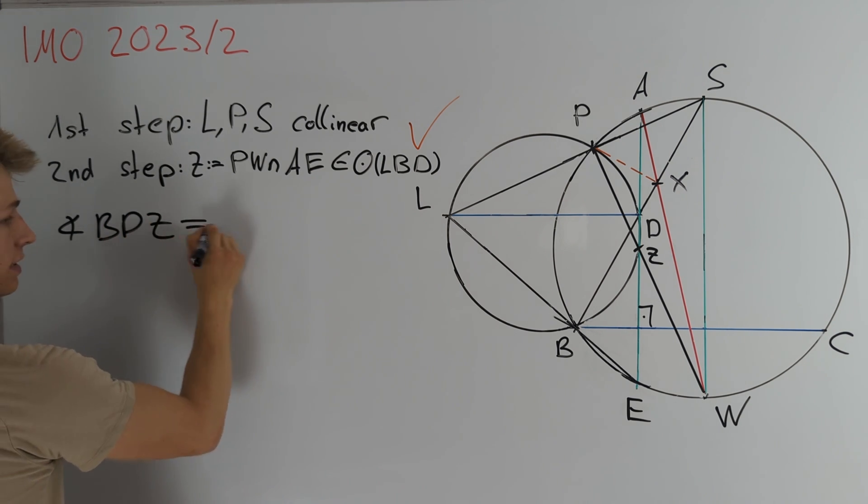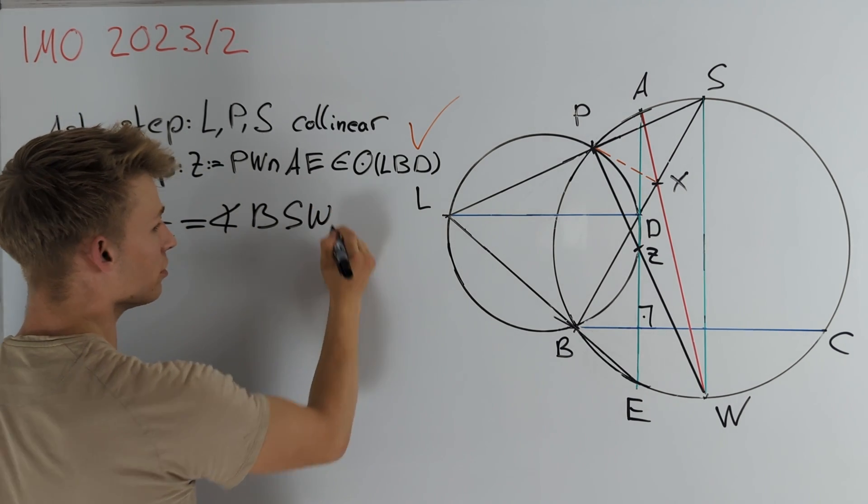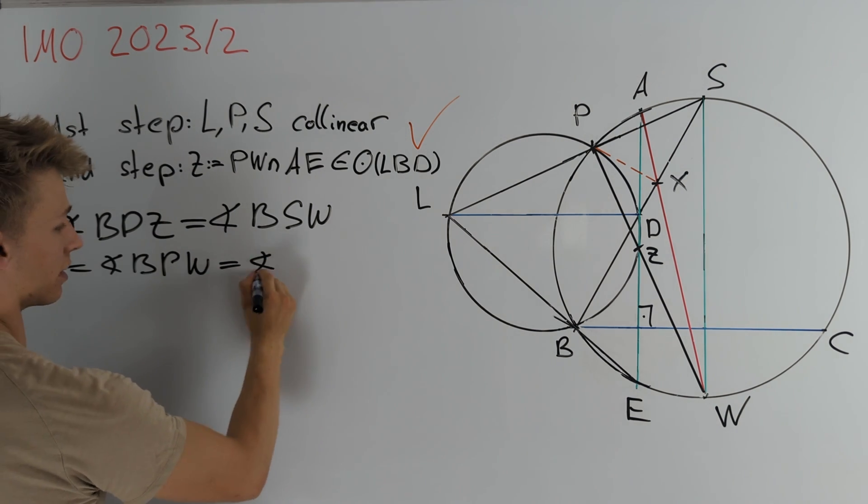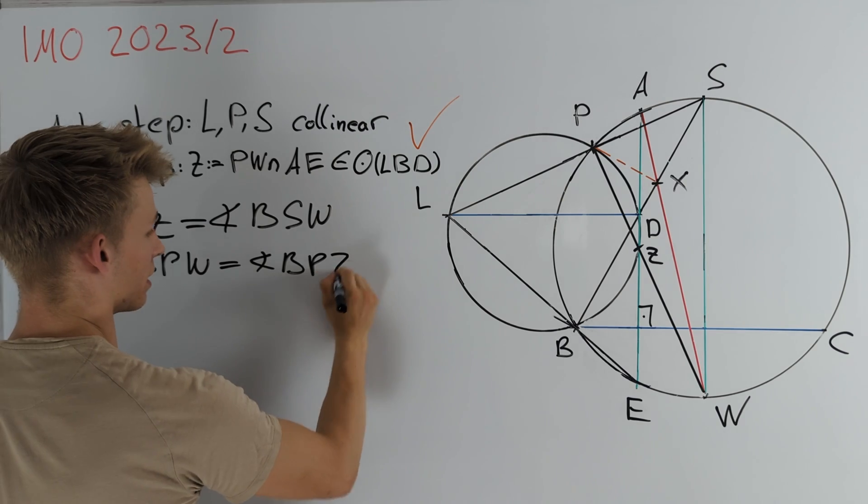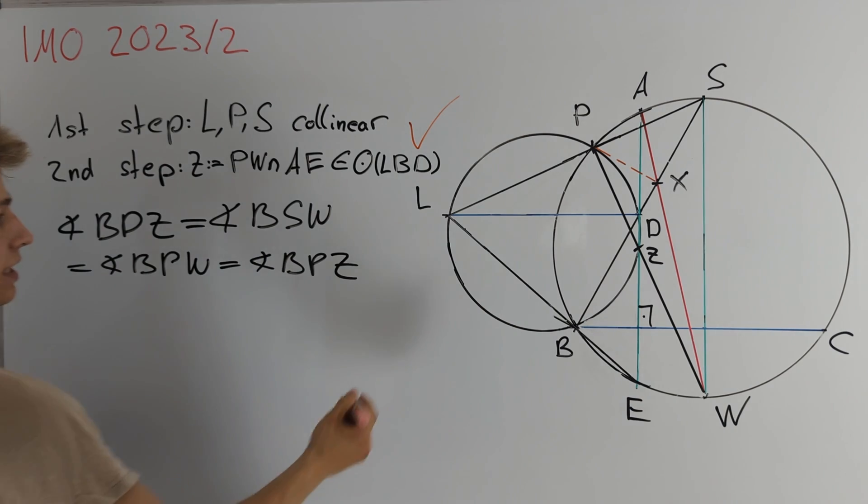So we get that angle BDZ is equal to angle BSW which is equal to angle BPW and BPW is nothing but the angle BPZ. So Z lies indeed on the circle here and our second step is done.